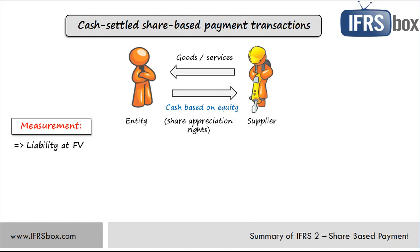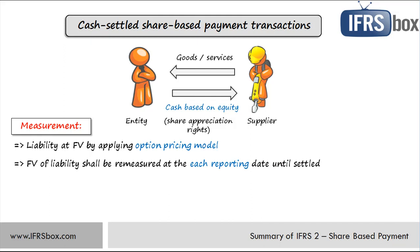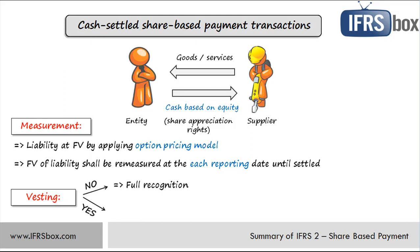As this is a cash-settled transaction, the credit side of the entry goes to liabilities, not equity. This liability shall be measured at its fair value on initial recognition, and the fair value of liabilities from share appreciation rights shall be determined by the application of an option pricing model, taking into account specific conditions. The liability shall be re-measured at each reporting date until settled — this is a key difference from equity-settled share-based payment transactions. Share appreciation rights can be both vested and non-vested, and the rules are similar: if not vested, recognize fully at grant date; if vested, recognize over the vesting period.